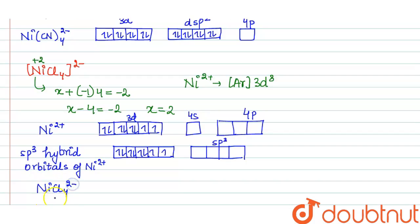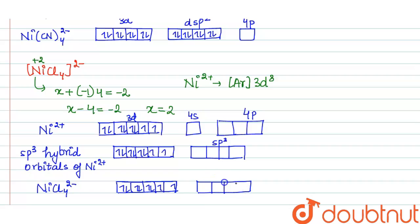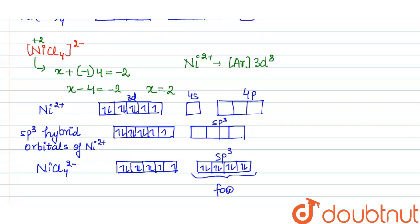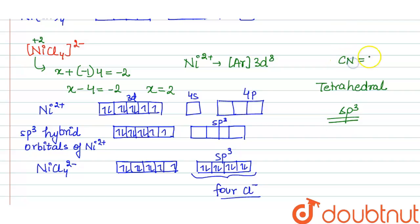In NiCl4²⁻, the four chloride ligands donate their lone pairs of electrons to nickel in the sp³ hybrid orbitals. With the 8 electrons in 3d remaining unpaired and the four electron pairs from the four Cl⁻ ligands accepted in sp³ hybrid orbitals, the geometry of this complex is tetrahedral, since it undergoes sp³ hybridization with coordination number 4.